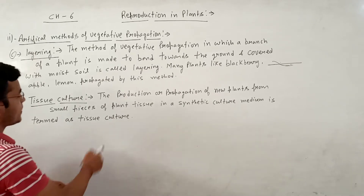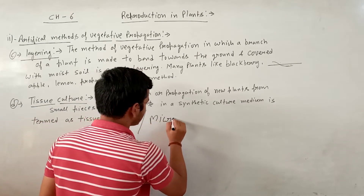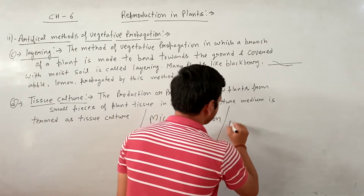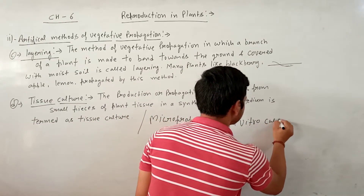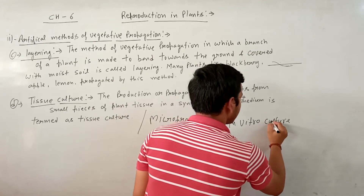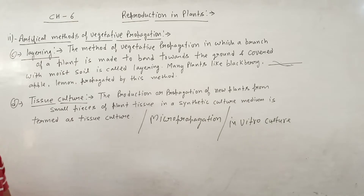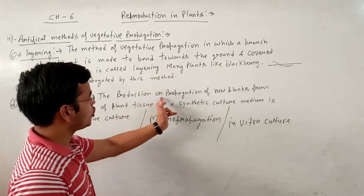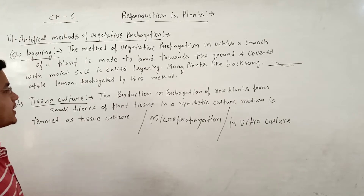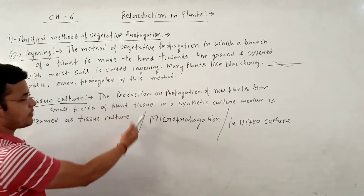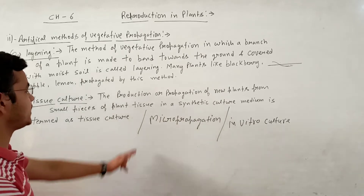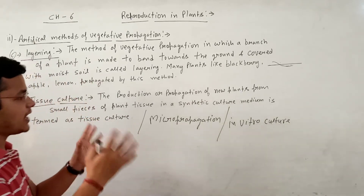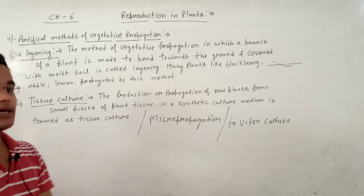Tissue culture क्या है? जिसे commonly हम micropropagation भी कहते हैं, और in vitro culture भी कहा जाता है. In vitro culture या micropropagation, जिसे हम commonly tissue culture भी कहते हैं - the production or propagation of new plants from small pieces of plant in a synthetic culture medium. किसी synthetic culture medium में, lab की condition में, उसे हम कहते हैं tissue culture.